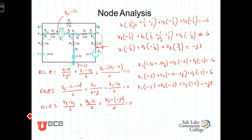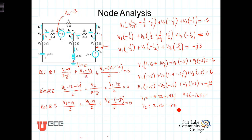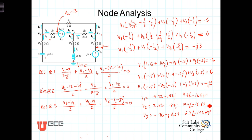When you plug this into a matrix solver, you find that V1 equals negative 4.72 minus 0.88j in rectangular coordinates, which in polar coordinates is 4.8 angle negative 169.5 degrees. V2 equals 2.46 minus 0.87j in rectangular, or 2.6 angle negative 19.84 degrees in polar. V3 equals negative 0.76 minus j2.59 in rectangular, or 2.7 angle negative 106.29 degrees in polar.